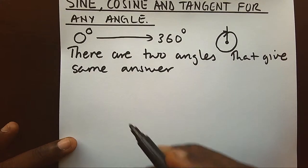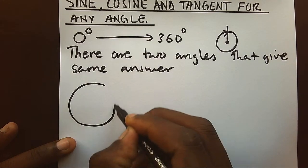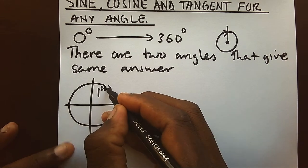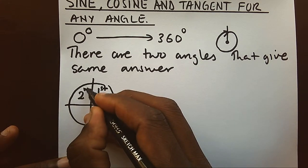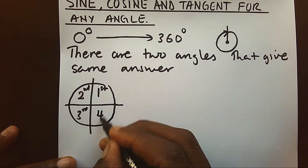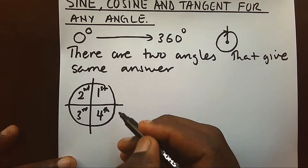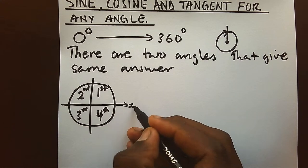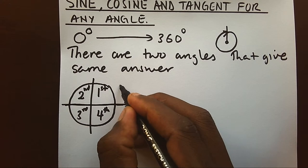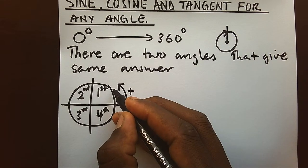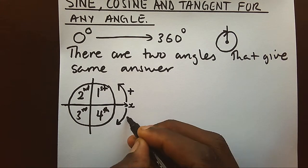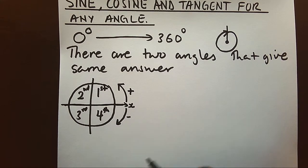We have what we call quadrants: first, second, third, and fourth quadrant. From the horizontal x-axis, a positive angle is measured going up and anti-clockwise, while the negative angle goes clockwise. For our purposes, we take normal positive angles.